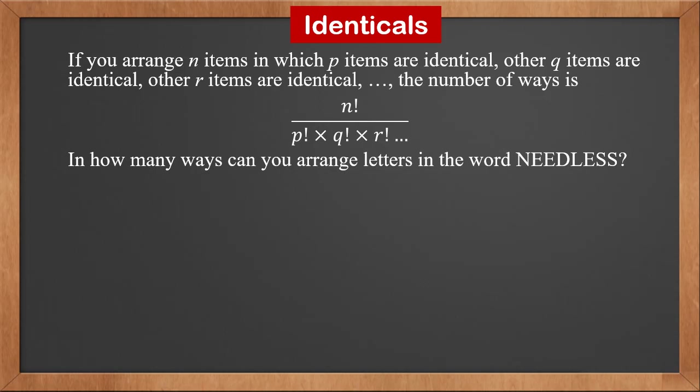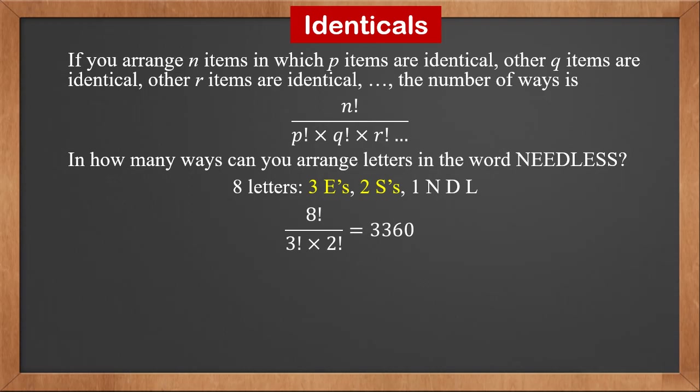In how many ways can you arrange the letters in the word 'needless'? There are eight letters: three E's, two S's, one N, one D, and one L. So the solution is 8! ÷ (3! × 2!), which is 3360.